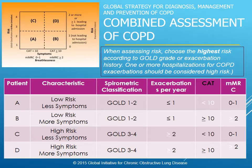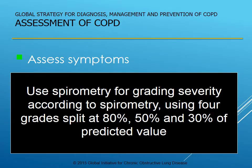We're going to add the spirometry and then all of this is going to start to make just a little bit more sense. When it comes to assessment, the first thing we're going to do is assess those symptoms using one of the three scales to give you an objective measurement. You can just sit down and go through with the patient — can you get dressed without getting short of breath? Can you walk to the mailbox? Can you walk down the street? You can get a good feel for their symptoms. The next thing you're going to add is your spirometry.